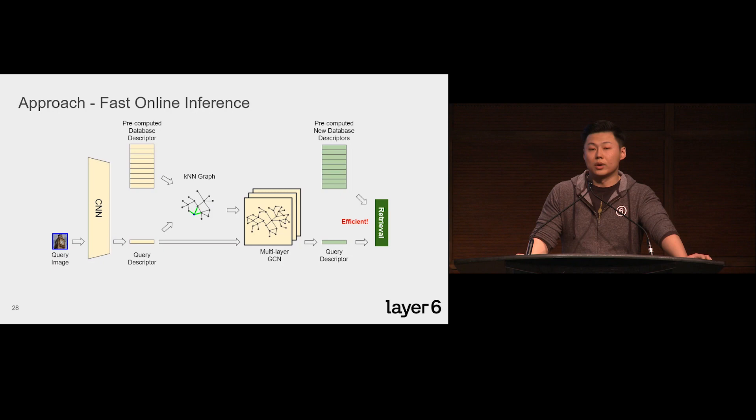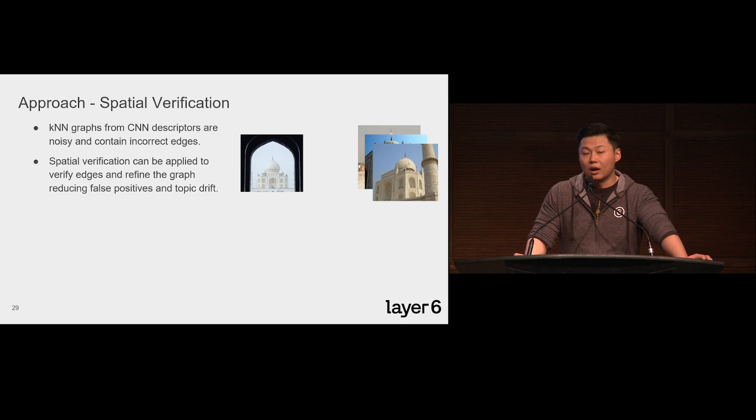Next, I'll show how we modify the KNN graph by a technique called spatial verification. This gets a stronger result without slowing down the online inference speed. Our model heavily relies on the KNN graph generated from the CNN descriptors. A principled way to improve it is to verify its edges.